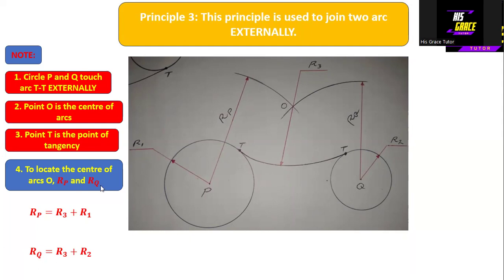To locate the center of arc O, we need to find the values of rP and rQ. The radius of circle P is r1, the radius of circle Q is r2, and the radius of arc TT is r3. Once we determine rP and rQ, we can find point O, which is the center of the arc.